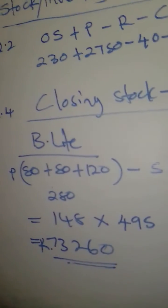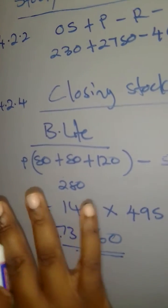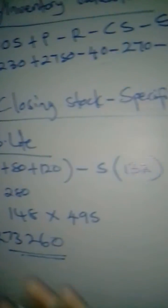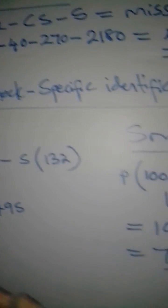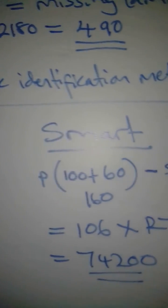These are the values of our closing stock using the specific identification method. From the calculations, you can tell that the specific identification method is straightforward. Thank you.